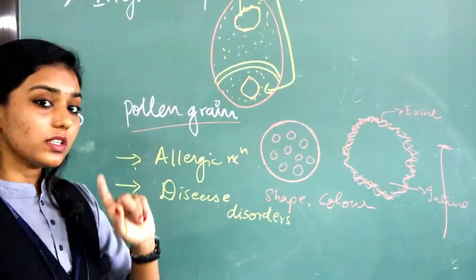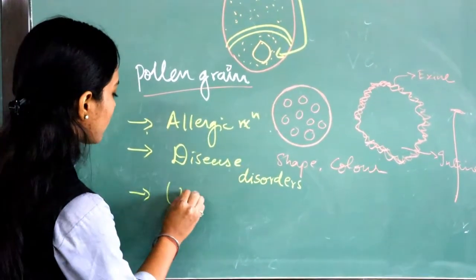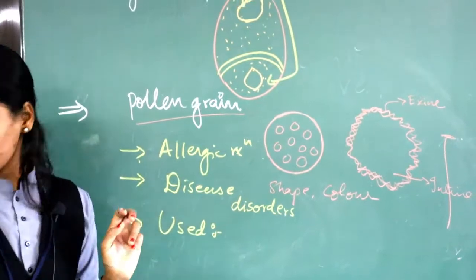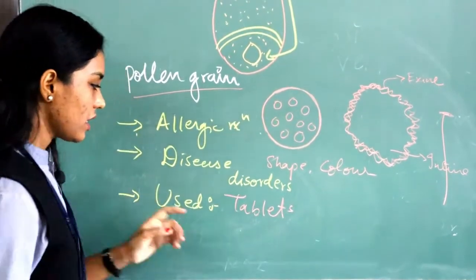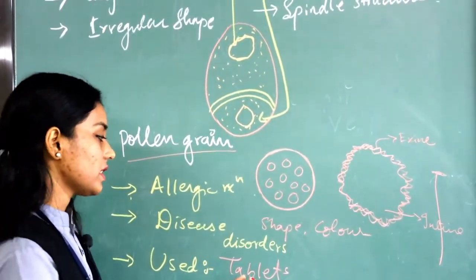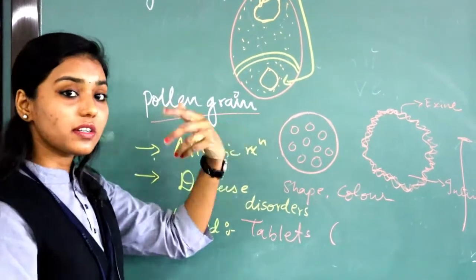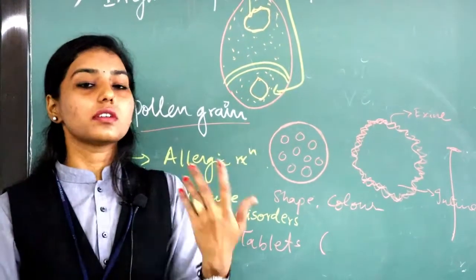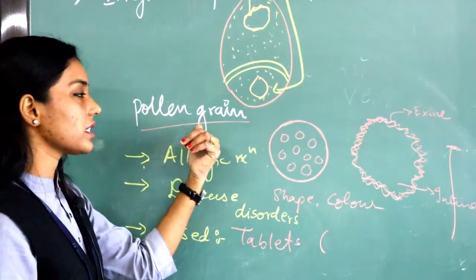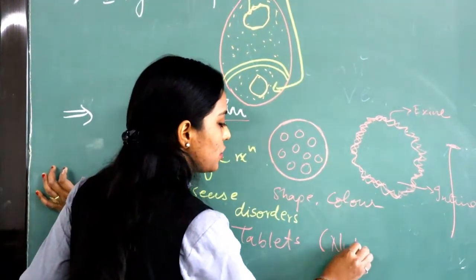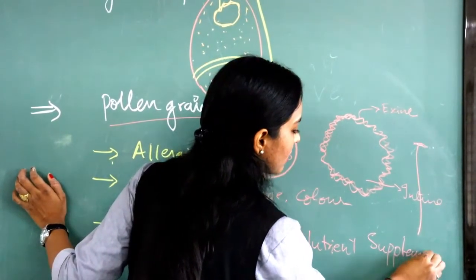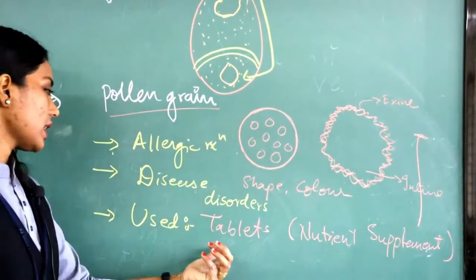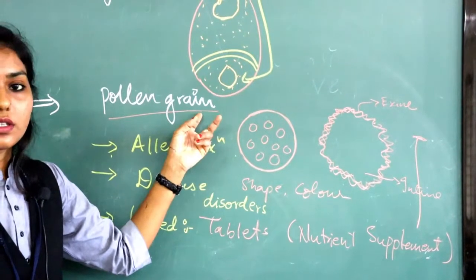Pollen grains also have uses. Pollen grains are used as a tablet — they are given in the form of tablets in western countries, because pollen grains are nourished by many types of cells, including tapetum, whose main function is to nourish the pollen grain. So nutrients are mostly present in pollen grains, and as a nutrient supplement, tablets of pollen grains are given.